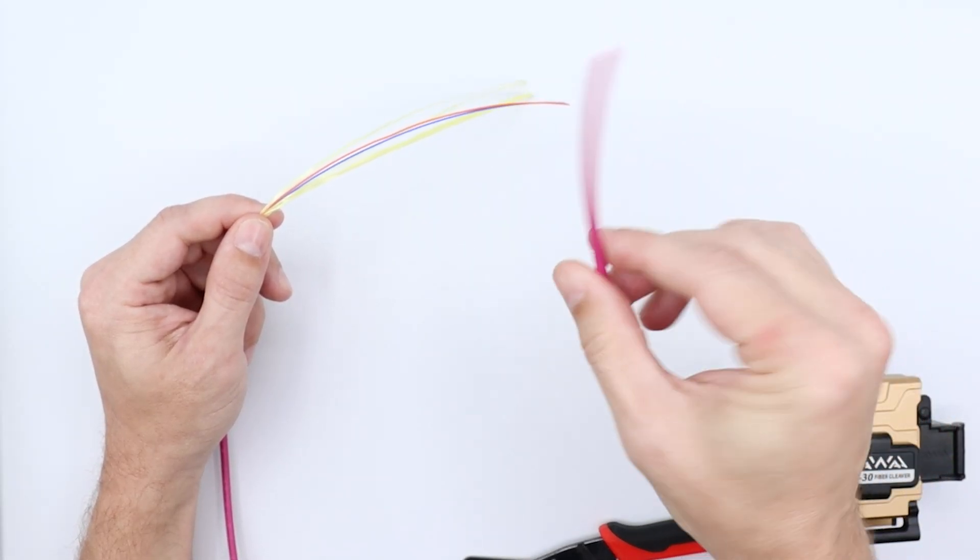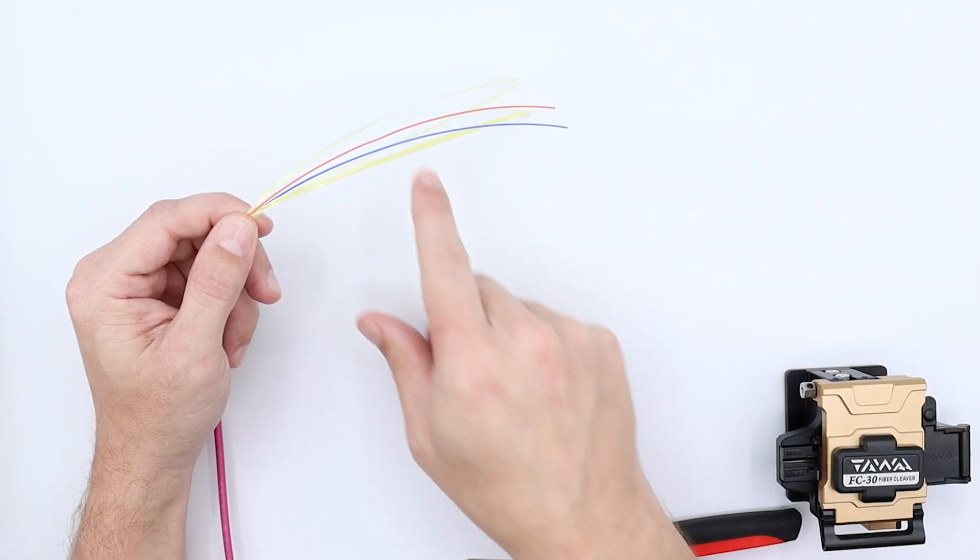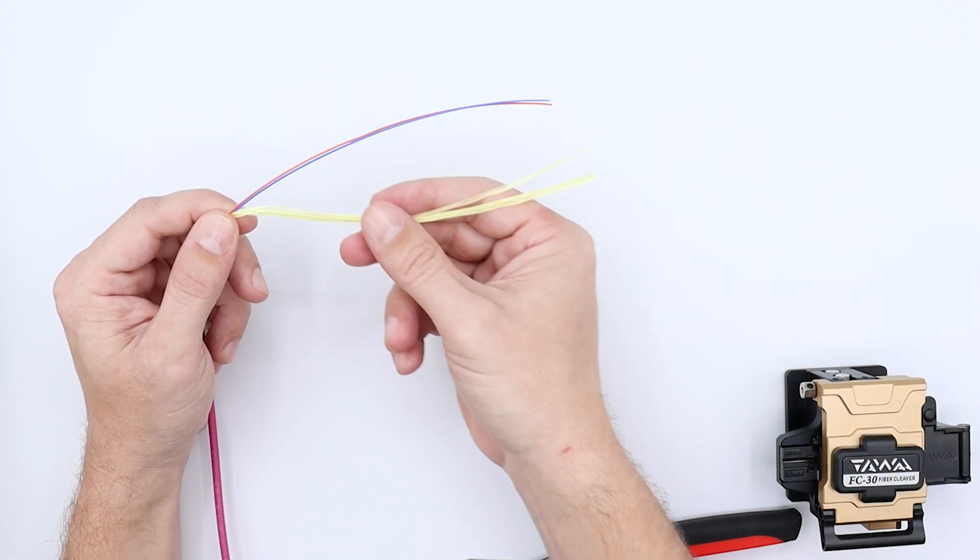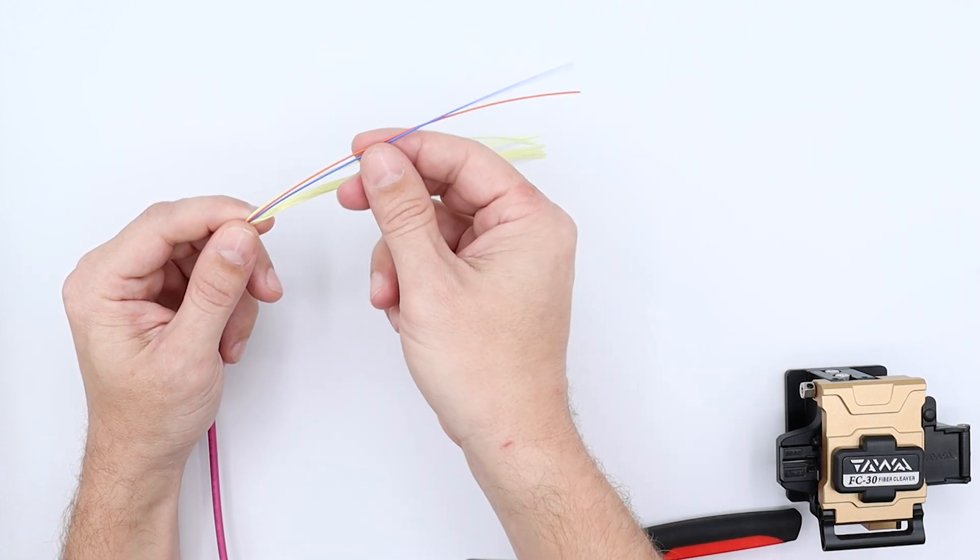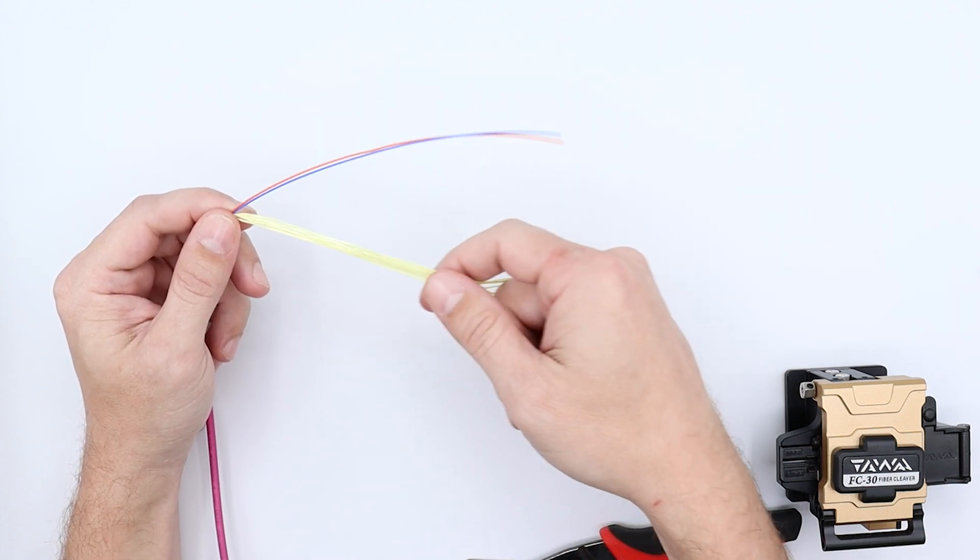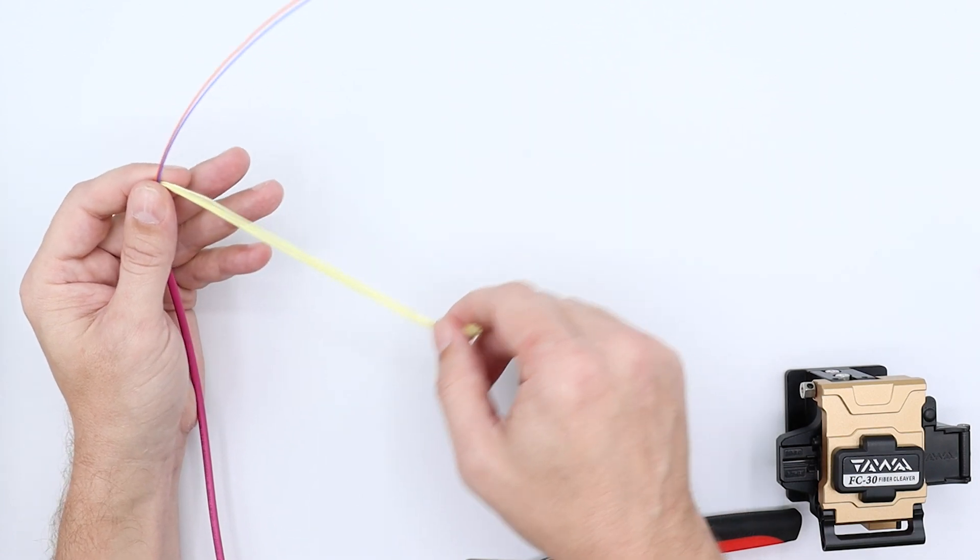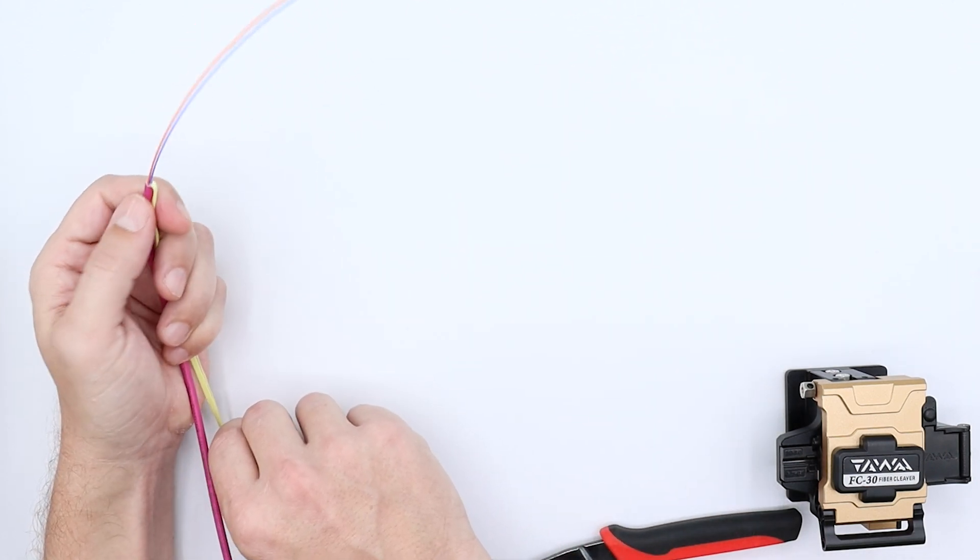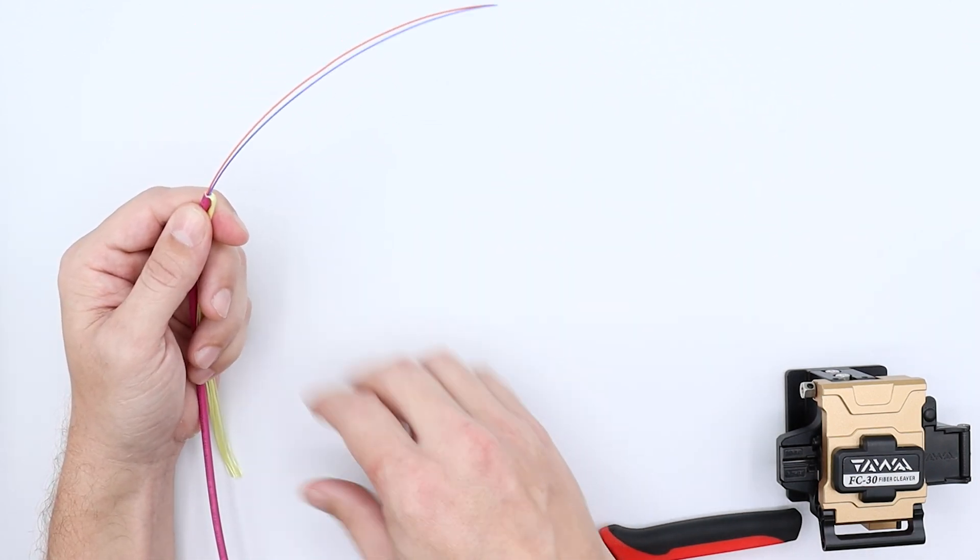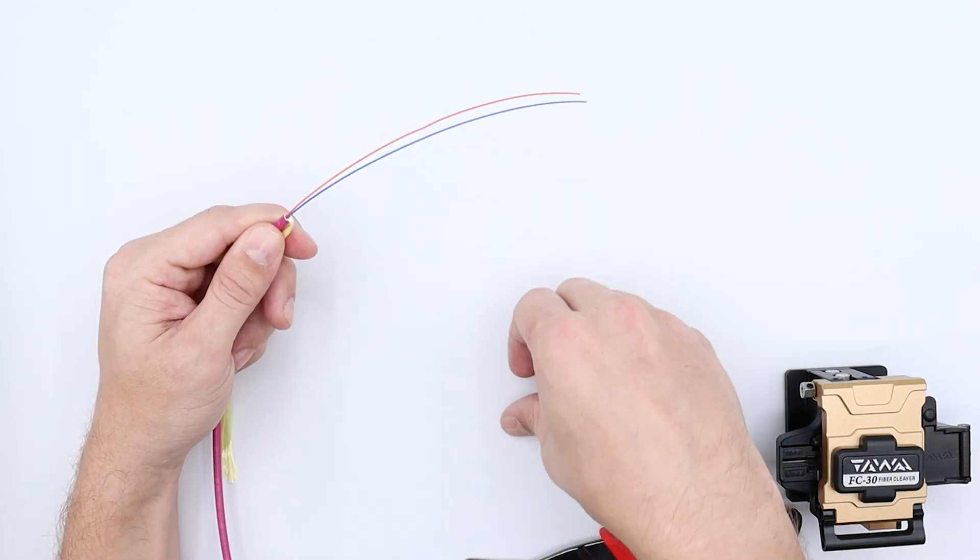The jacket then is slid off and that can just be set aside and put away. What we have here is a two-strand fiber, so we've got our two individual strands, the blue and the orange here, and then we have our aramid strength member or oftentimes called Kevlar. We can just kind of stick that back to the side.